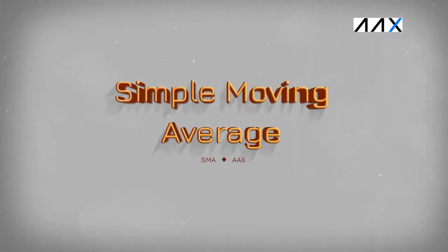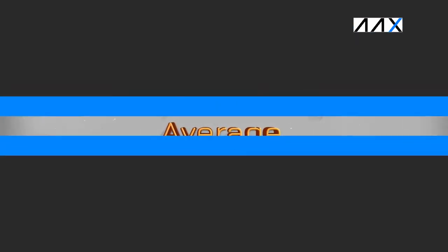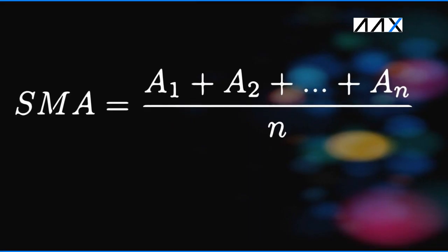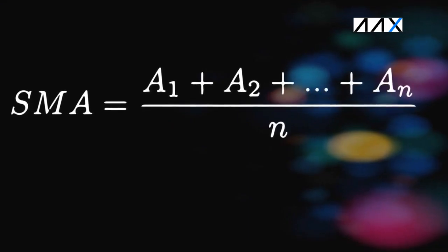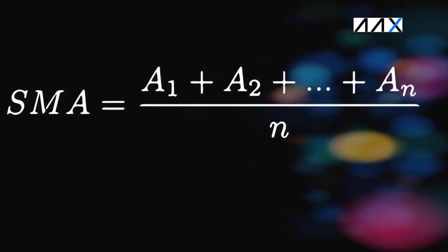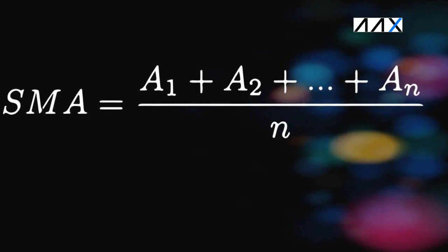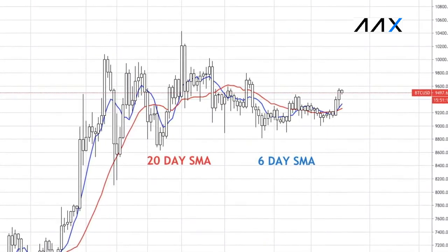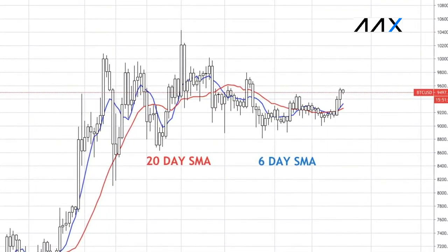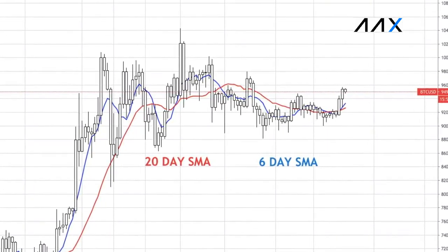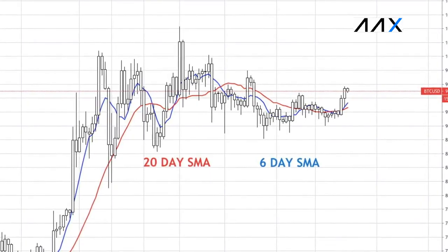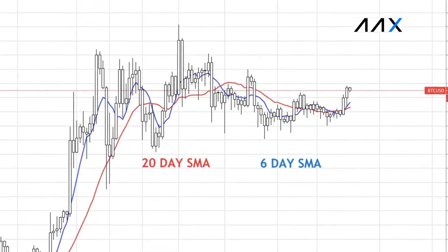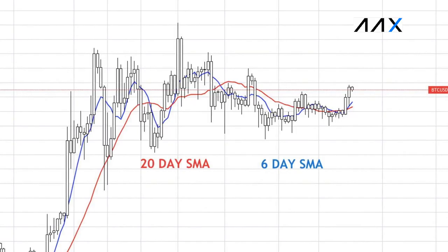The Simple Moving Average is a technical analysis indicator which takes the average closing price of a cryptocurrency over the period of the Simple Moving Average. For example, if you have a 20-day SMA, you will take the closing price from the last 20 days and divide it by 20. The SMA was created to remove short-term fluctuations in price, although it has become the basis for many indicators.